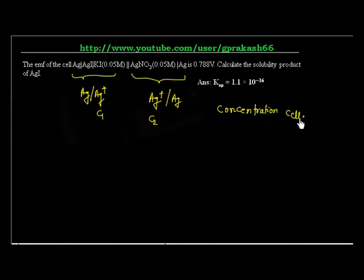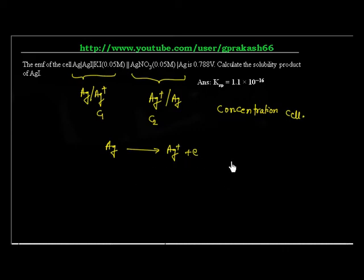Now let us discuss this one. So left hand side: oxidation. Oxidation happens on the left hand side — Ag goes to Ag+ plus electron. And this is your E° cell. Now on the right hand side, let us say the concentration of Ag+ goes to Ki, and I minus concentration — I know this side.